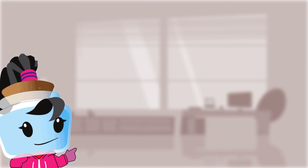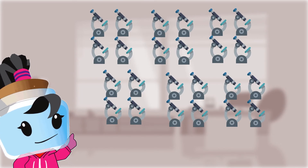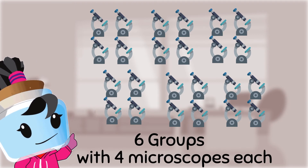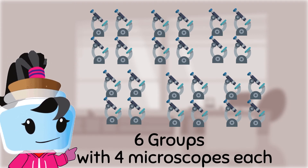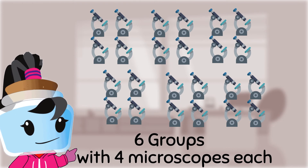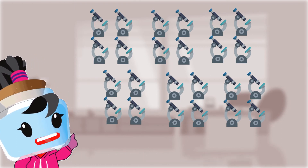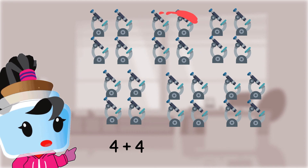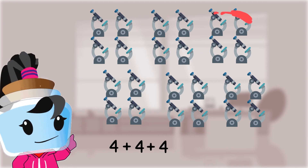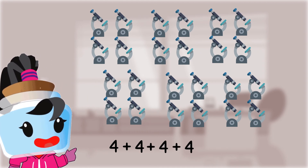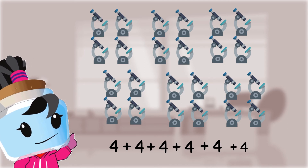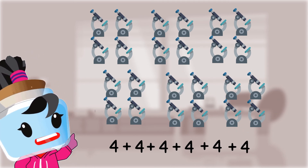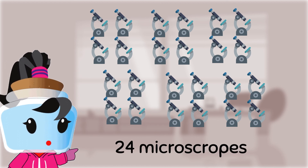Next, we have these microscopes. Notice that we have six groups with four microscopes each, which means we can write this as four plus four plus four plus four plus four plus four, which is equal to twenty-four microscopes.